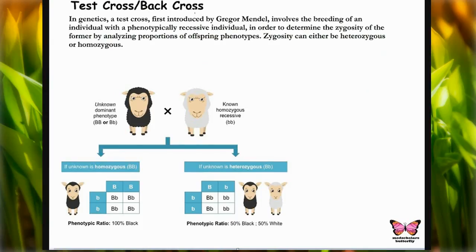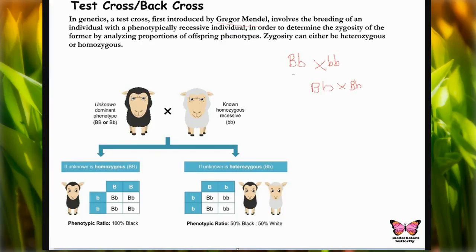Next is test cross or back cross. In genetics, a test cross — first introduced by Gregor Mendel — involves breeding an individual with a phenotypically recessive individual to determine the zygosity of the former by analyzing the proportion of offspring's phenotype. Zygosity can be either heterozygous or homozygous. In the F1 generation, we know the phenotype is black or white, but the test cross tells us whether the genotype is pure or hybrid.